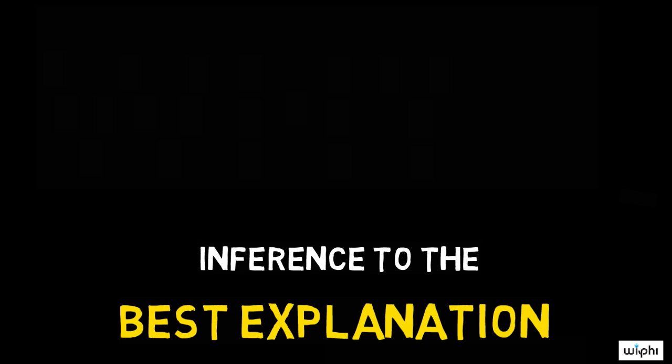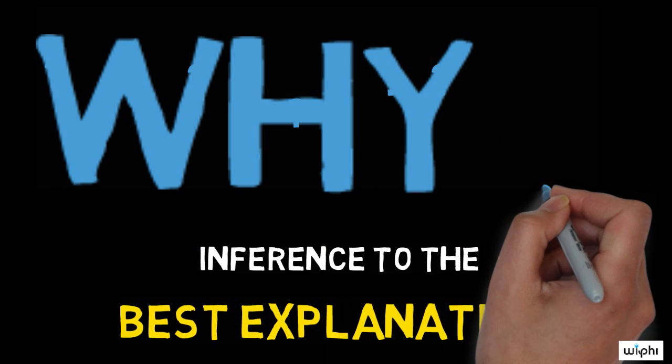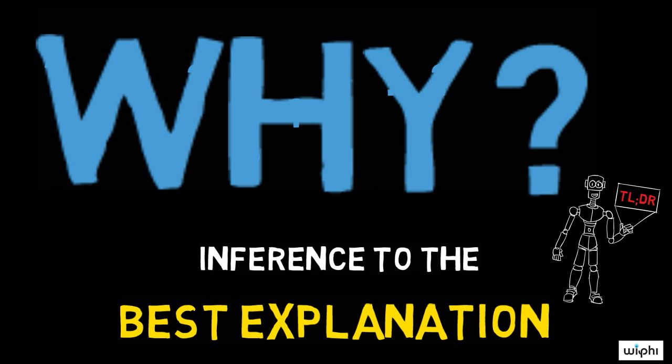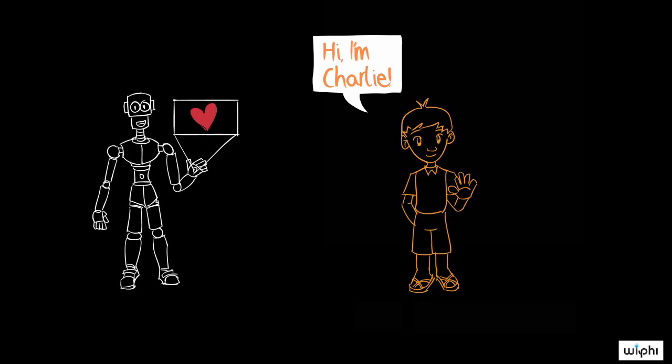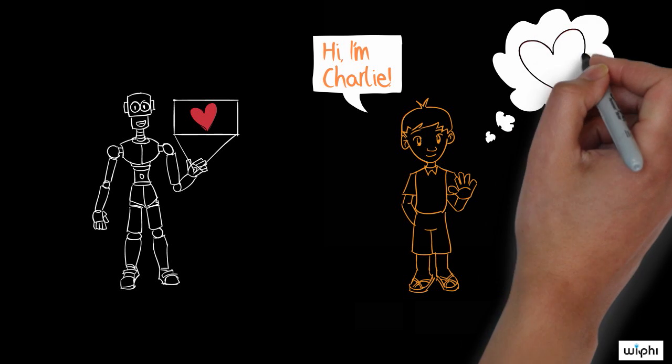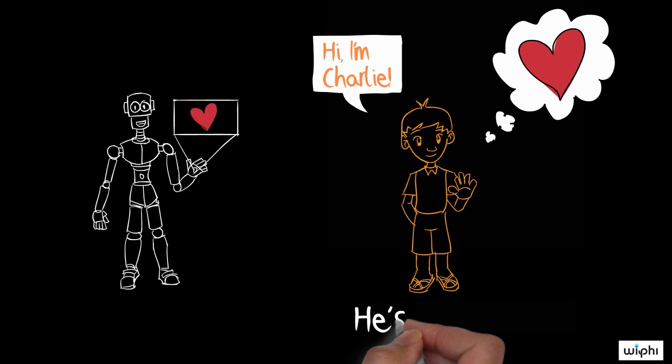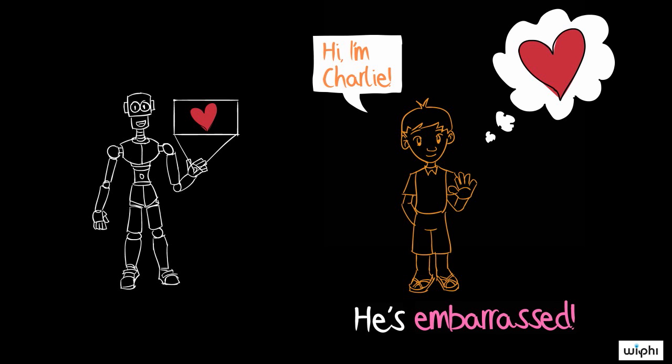Abductive arguments rest on an inference to the best explanation. The simplest way of thinking about this idea is in terms of why questions. Suppose you tell your friend that someone has a crush on him and his cheeks turn bright red. Why did that happen? What's the explanation? Well, the most natural answer seems to be that it's because he was embarrassed to find out about the crush. That's why his cheeks turned red.